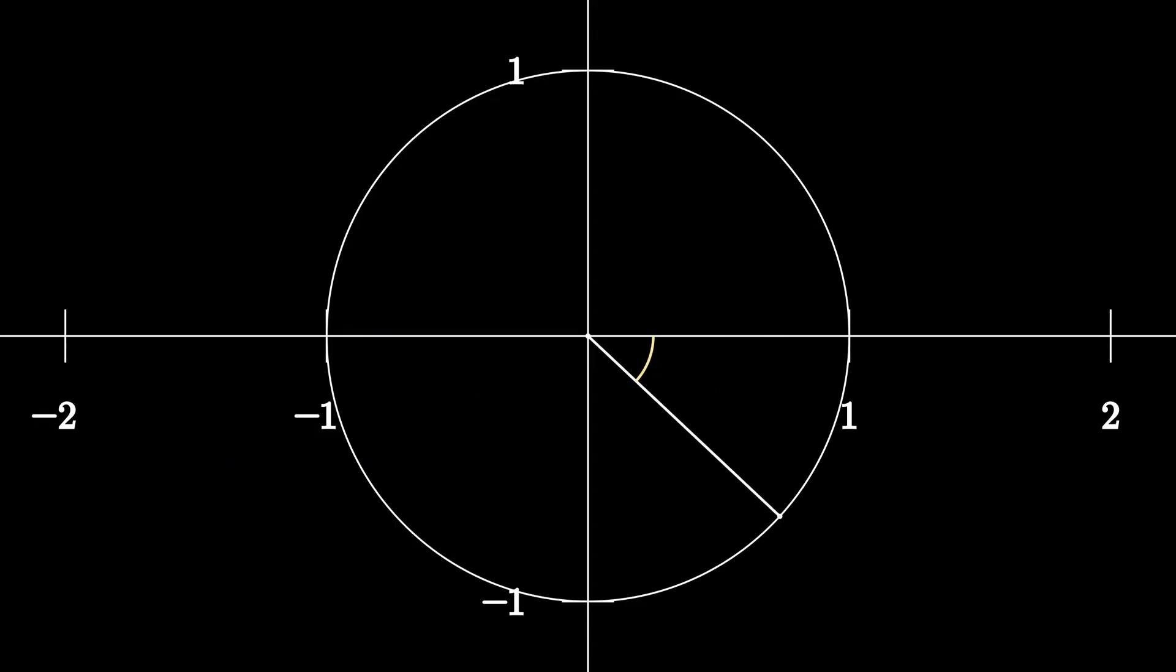What about minus 45 degrees? Since minus 45 degrees is 45 degrees clockwise from the positive x-axis, we use the 45, 45, 90 triangle. Compared to 45 degrees, the shape of the triangle stays the same. But now, y is negative. That means the coordinates at minus 45 degrees are root 2 over 2 comma minus root 2 over 2.